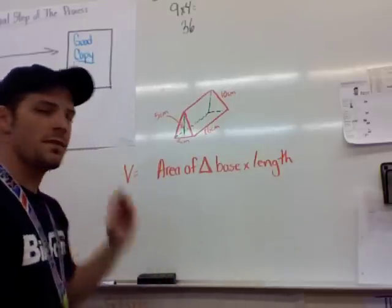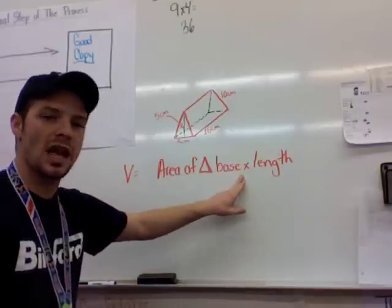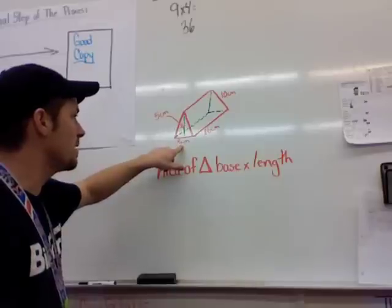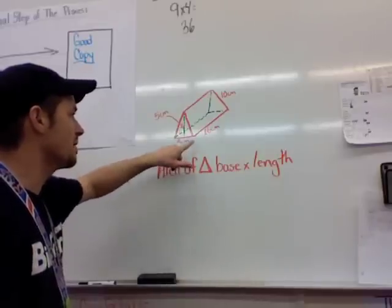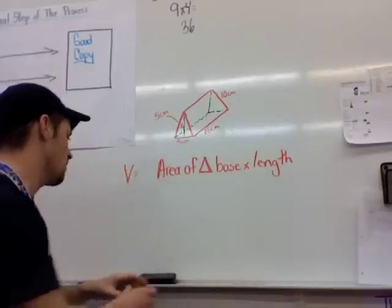Because the way we find the volume of a shape is we find the area of the triangular base and we multiply it by the length. So in this particular instance, it's a 3 cm by 5 cm base and it goes 16 cm back. So those are important things to think of.